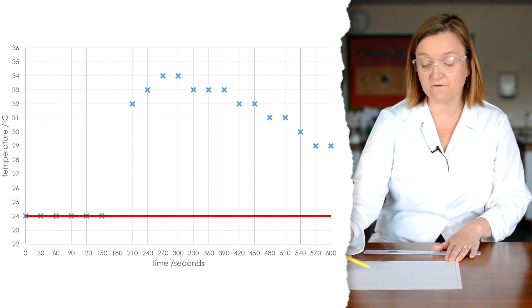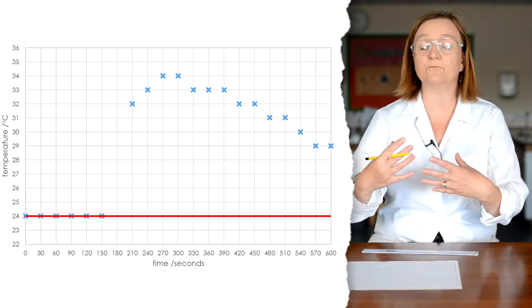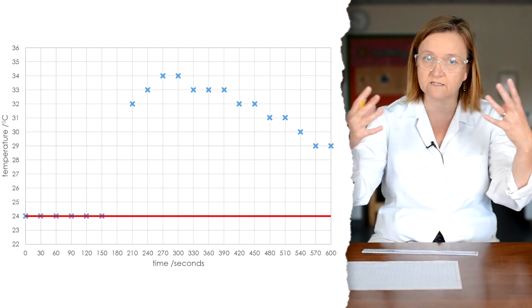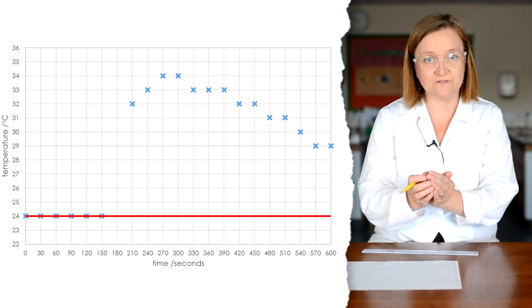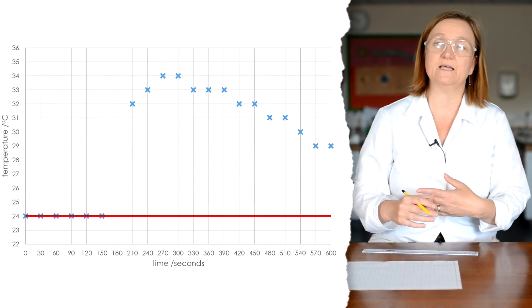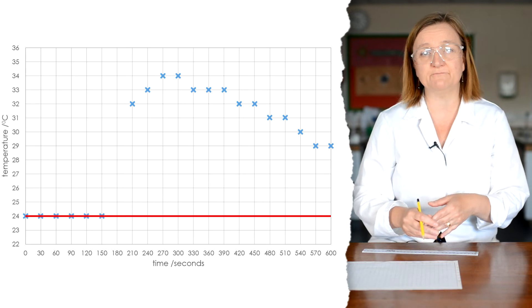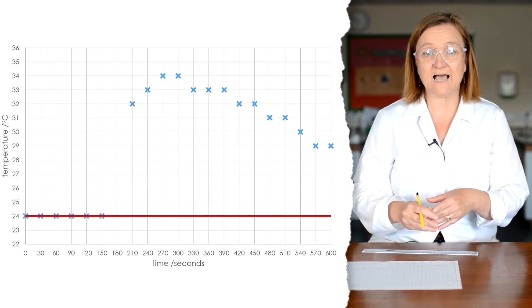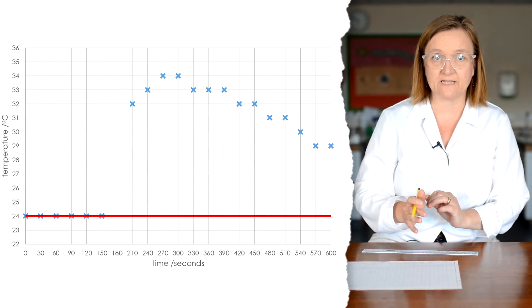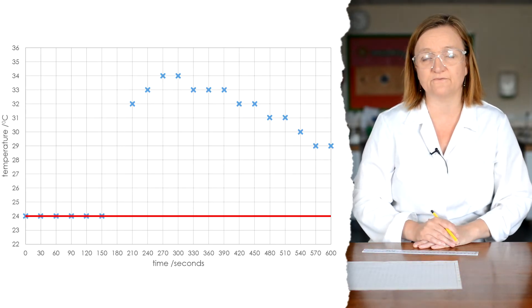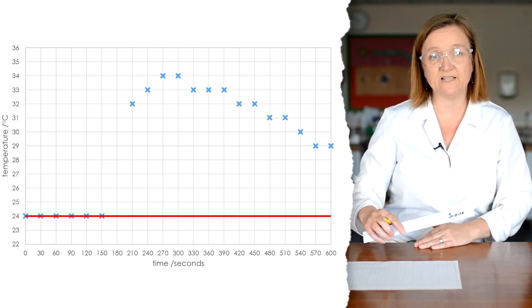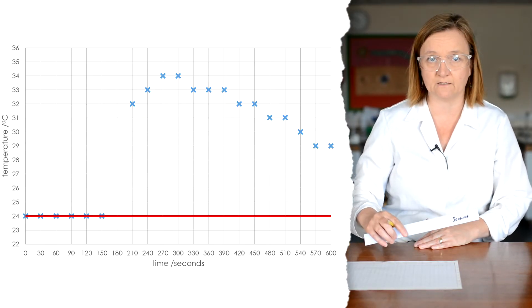Now obviously, the increasing part was as the exothermic reaction happened and energy was being released. And then this part of the graph where the temperature is cooling is once the reaction is completed and the energy within the solution is starting to be lost to the environment, even though we've got it in the polystyrene cup with the lid on. Now, what I want to do is I want to work out what the maximum temperature change would have been had all of the energy been released instantly at three minutes and there had been no loss of energy to the surroundings.